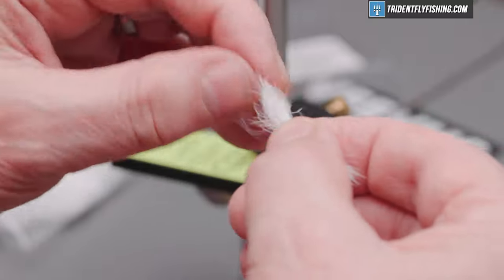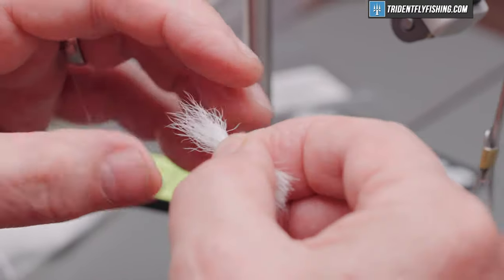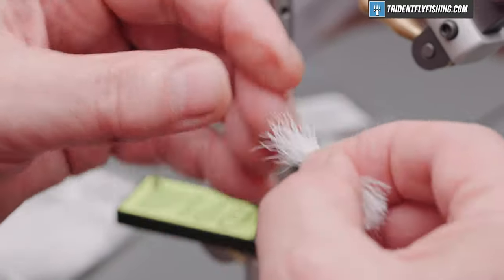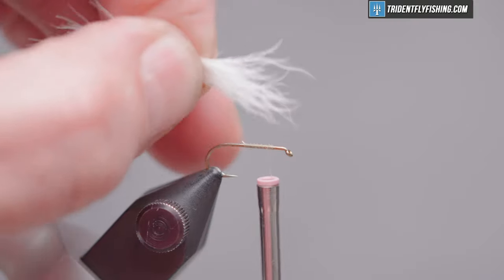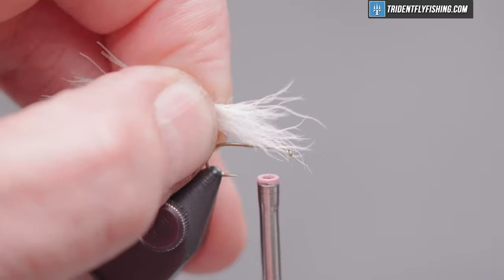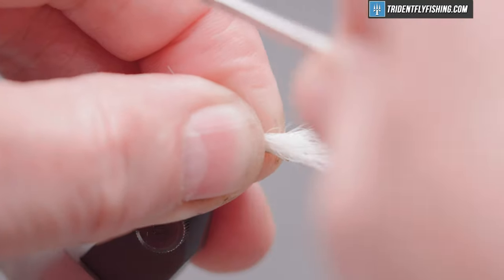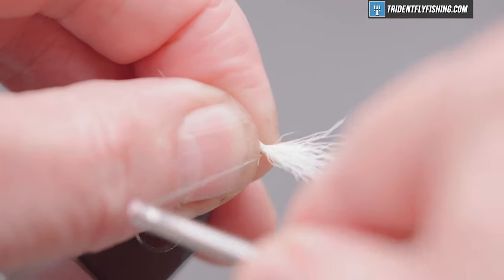Doesn't stack very well because of all of the kink in the hair. So we're just going to try tying it in the way it is. Got this turned around in my hand. So we want the wing to be the length of the hook shank. So we'll measure that out. And tie that in on top.